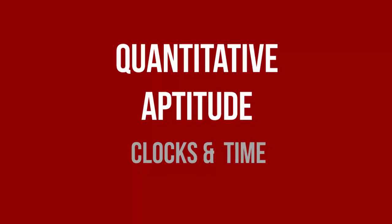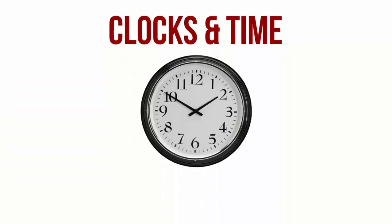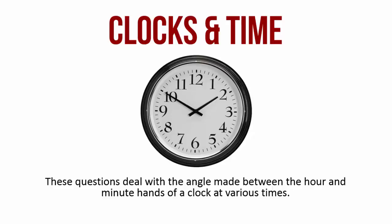We shall now discuss quantitative aptitude questions regarding clocks and time. These questions basically deal with an analog clock where you have an hour hand and a minute hand, and at different times through the day, the angle made between the hour hand and the minute hand varies. These questions primarily deal with this angle.